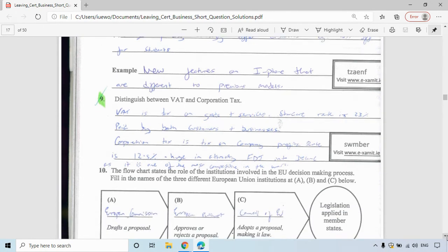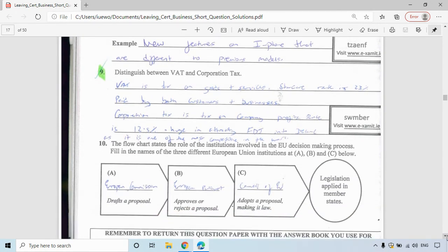Question 10: the flow chart shows the role of the institutions involved in the EU decision-making process. You have to fill in the names of these institutions A, B, and C. A is the European Commission, B is the European Parliament, and C is the Council of the EU. So there are the solutions to the 2016 short questions.